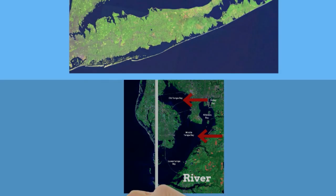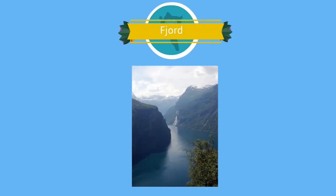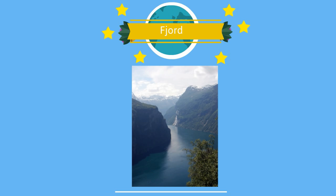Bar-built estuaries are formed when sand bars build up along the coastline and they partially cut off the waters behind them from the sea. Fjord estuaries are narrow with steep sides and are usually straight and long. Fjords are found in areas that have been covered by glaciers.